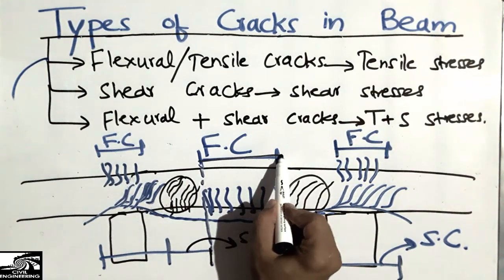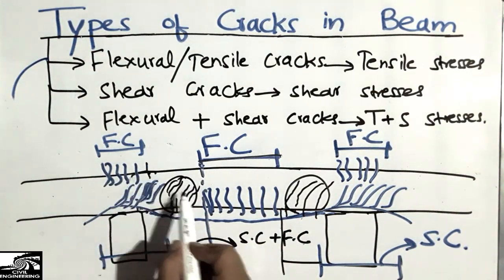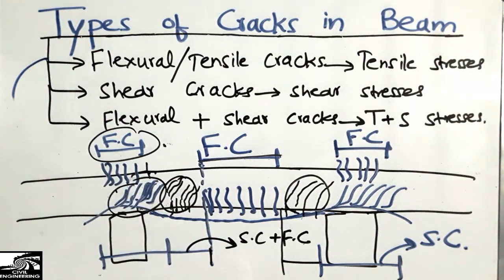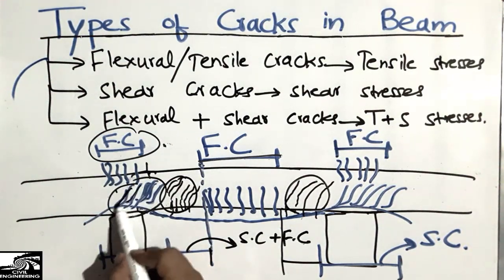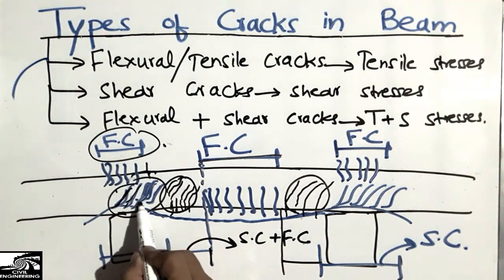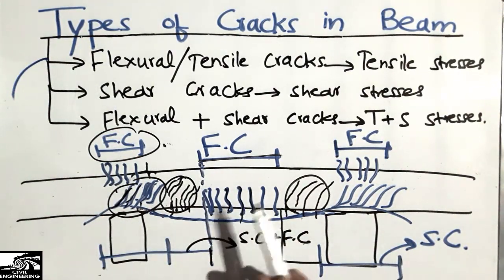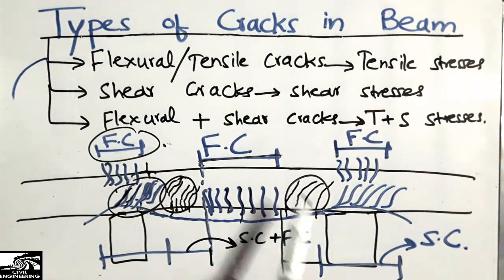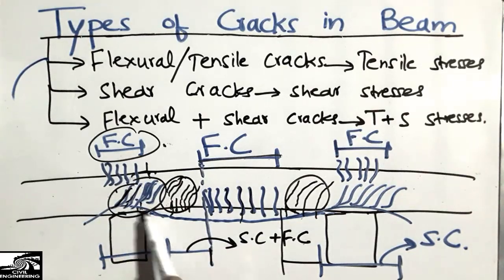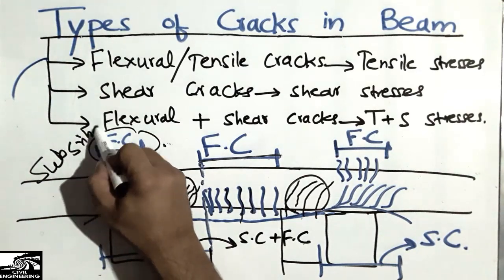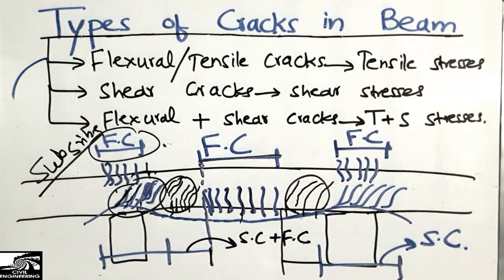To summarize: at the midpoint we have the flexure crack zone; from the flexure zone toward the joint we have the combination of flexure and shear cracks; and at the joint at the top we have flexure cracks while at the bottom we have shear cracks at 45 degrees. These are the most common crack types in beams under uniformly distributed load. Please subscribe to our channel for more civil engineering updates — I will upload more videos daily.